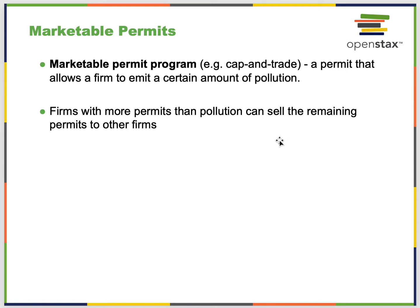Cap and trade, which you hear about often, is a permit that allows a firm to emit a certain amount of pollution. If you reduce your pollution below the assigned cap, you can sell the remaining allowance to another company for money. So there's a double incentive: reduce pollution and also sell off your remaining cap if you come in under it.